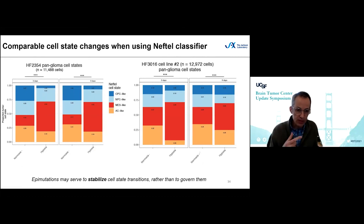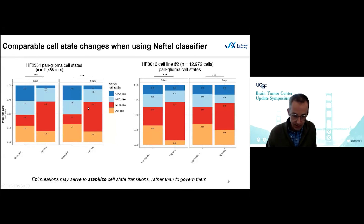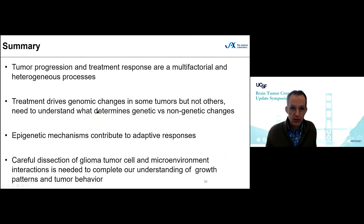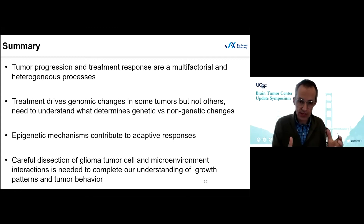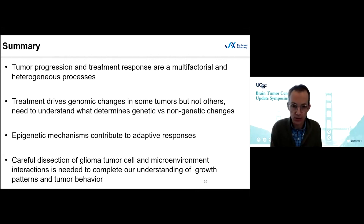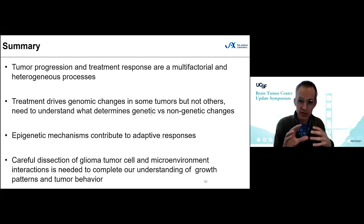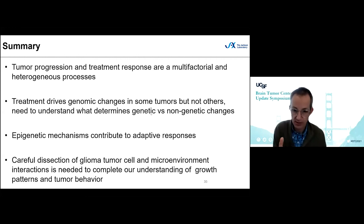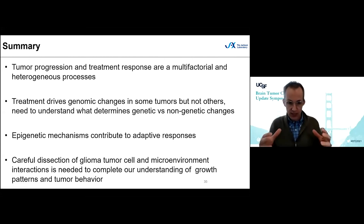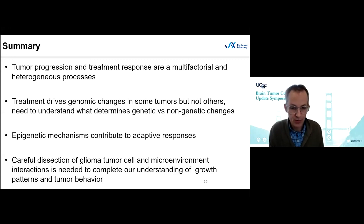Using the same dataset and repeating the analysis with Mario Suva's cell states, we find that hypoxia results in an increase in the mesenchymal-like cell state. To conclude the second and final part: tumor progression and treatment response are multifactorial and heterogeneous processes. Treatment drives genomic changes in some tumors, like hypermutation and radiation-induced small deletion phenotype, but in others it's maybe more epigenetic — and there are probably even more mechanisms beyond that. We need to understand what determines whether tumors show a genetic versus a non-genetic response. Epigenetic mechanisms contribute to adaptive responses — stress creates epigenetic changes and results in different cell states. Careful dissection of tumor cell and microenvironment interactions is needed to complete our understanding of growth patterns and tumor behavior.